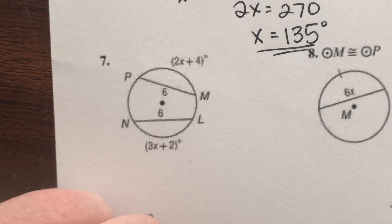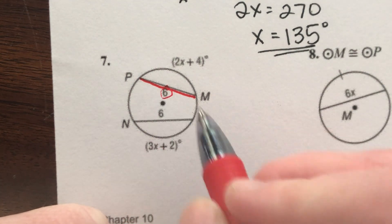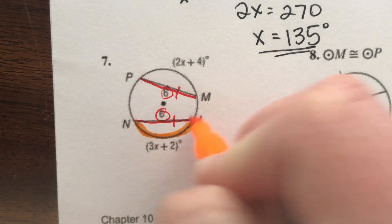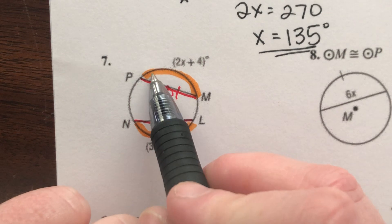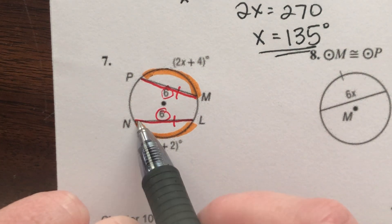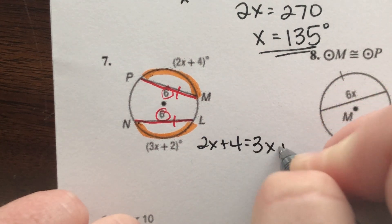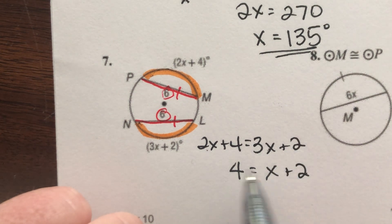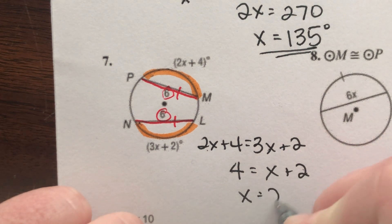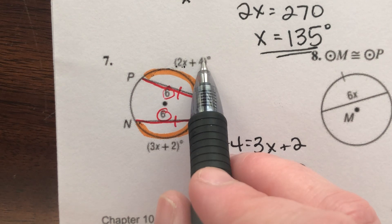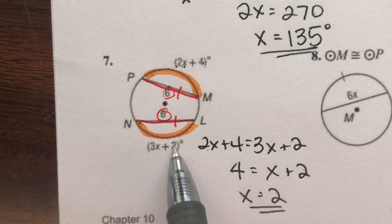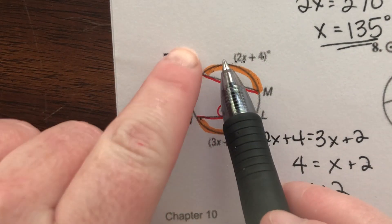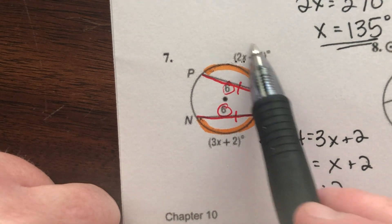Number 7: chord length 6 and chord length 6, so they're congruent. When chord lengths are congruent, the arcs are congruent. So 2X plus 4 equals 3X plus 2. Subtract 2X from both sides: 4 equals X plus 2. Subtract 2: X equals 2. Plugging in: 2 times 2 plus 4 is 8, and 3 times 2 plus 2 is 8. Both arcs are 8 degrees — tiny arc, but the numbers work.